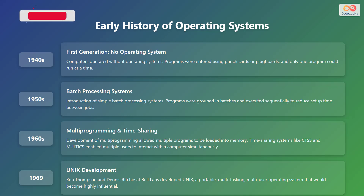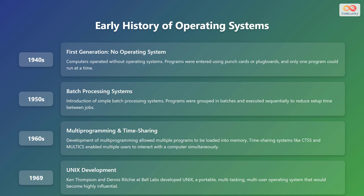The history of operating systems can be divided into several distinct phases. In the 1940s, computers operated without operating systems; programs were entered using punch cards or plug boards, and only one program could run at a time. The 1950s saw the introduction of simple batch processing systems where programs were grouped in batches and executed sequentially to reduce setup time between jobs. In the 1960s, multiprogramming was developed, allowing multiple programs to be loaded into memory, and time-sharing systems like CTSS and Multics enabled multiple users to interact with the computer simultaneously.